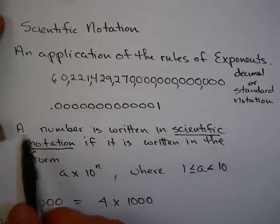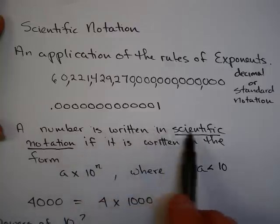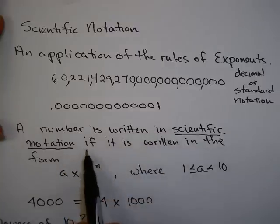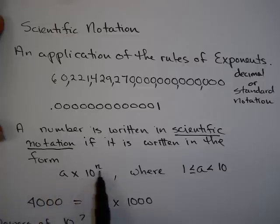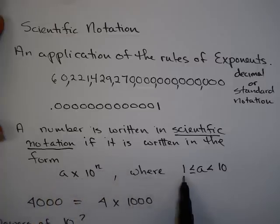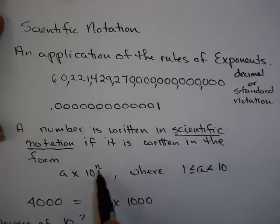Here's the definition: a number is written in scientific notation if it is written in the form A times 10 to the N, where A is between 1 and 10, and N is just an integer.